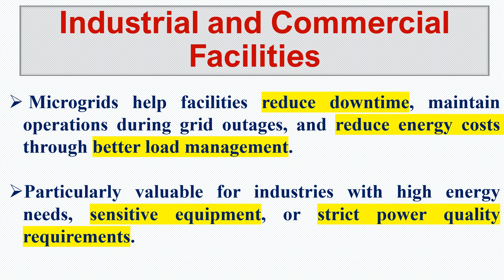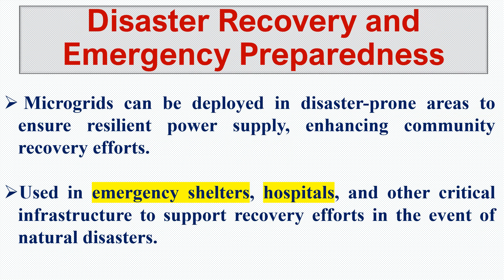Microgrids are particularly valuable for industries with high energy needs, sensitive equipment, or strict power quality requirements. Sensitive equipment may need a specific voltage range and high power quality with fewer harmonics in the system. Rather than asking the grid to provide super high quality supply, we can supply our own high quality electricity to the loads through the microgrid, customizing the quality of supply through our own power generation.